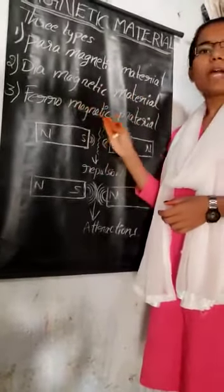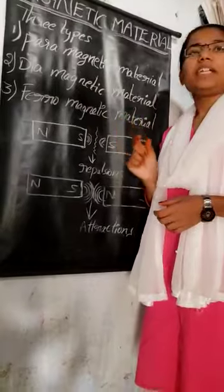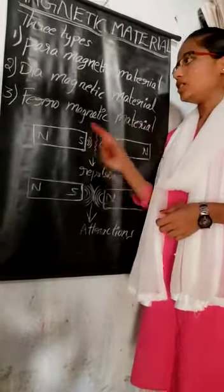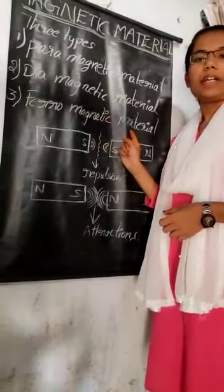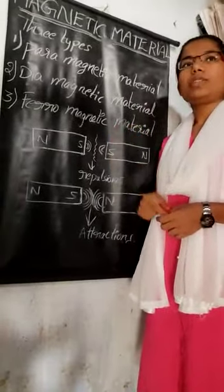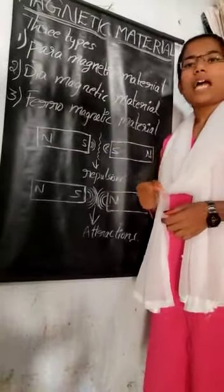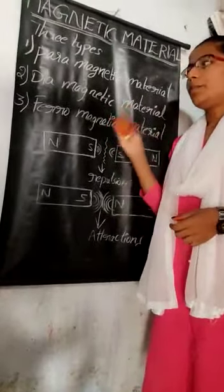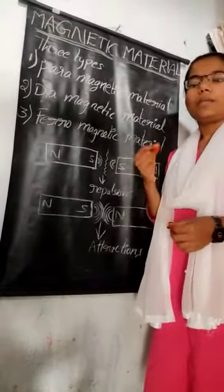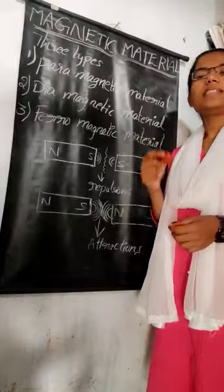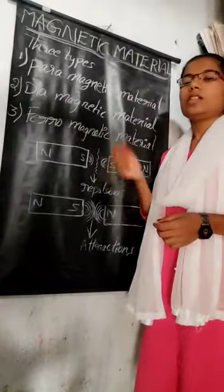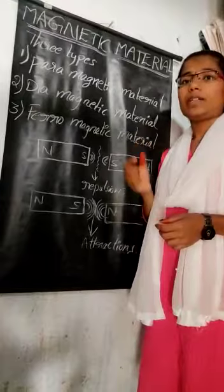And the last one is ferromagnetic material. The material which are strongly attracted by a magnet is called ferromagnetic material. The example of ferromagnetic material is iron. We know that iron has more attracting power. And the permeability of ferromagnetic material is much greater than one. And the susceptibility of ferromagnetic material is large and positive.